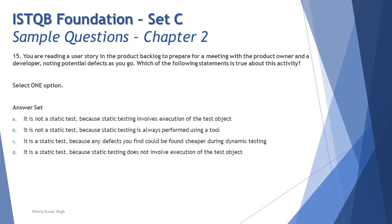This is a very generic statement defining the static testing or review process. During this review process, you are doing individual preparation — reading user stories in the product backlog — with the product owner and developer present. You are the tester, and as you read through the scenarios you are making note of potential defects you identify. Let's look at which statements are true or false.